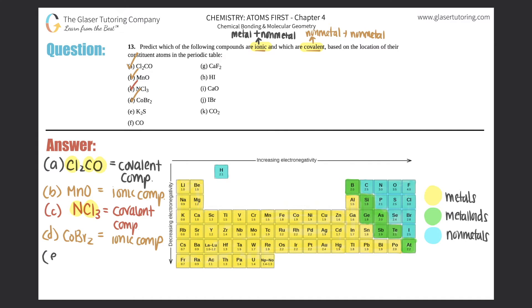Next, we got potassium sulfide, K2S. Potassium is over here, and sulfur is over here. Metal and a non-metal, so this one is also an ionic compound.